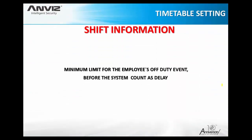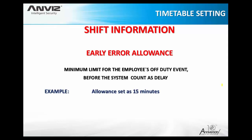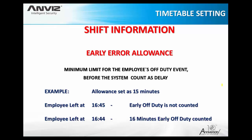The same applies to the next field, Early Error Allowance — this is the minimum grace period before the system counts an early departure as a violation. Setting fifteen minutes means that if an employee leaves fifteen minutes before the normal off-duty time, it will not count as an early error. But if he clocks out sixty minutes before the normal off-duty time, it will be counted as sixty minutes of early departure.